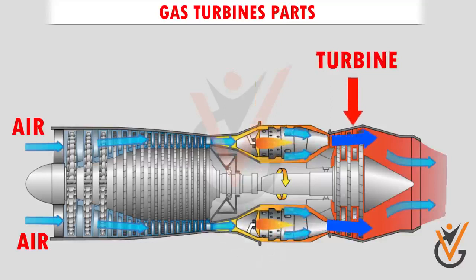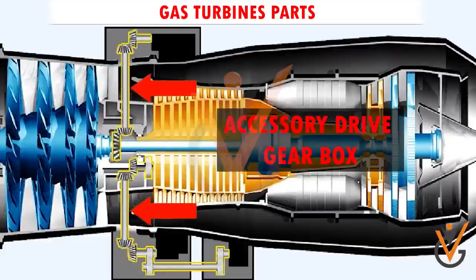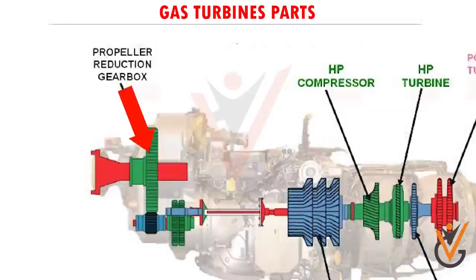Additionally, the gas turbine has an accessory drive gearbox to drive various pumps for fuel, water, and oil, and a reduction gearbox to reduce the high revolutions of the turbine to a more efficient speed for propeller operation.